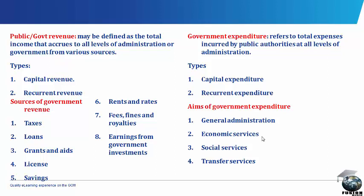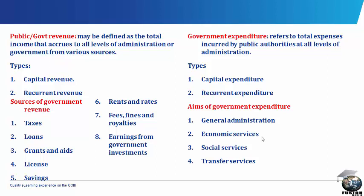Government Expenditure. Government or public expenditure refers to total expenses incurred by public authorities at all levels of administration. Types of Government Expenditure: there are two types — capital expenditure and recurrent expenditure. Capital expenditure consists of all expenditures on development projects and government investment and security, such as construction of roads, building of houses, schools, hospitals, and purchases of shares in ventures of companies. Capital expenditures are not usually made for immediate consumption but for future growth and development. The projects on which such expenditures are made are expected to earn investment income to the government if properly managed for commercial purposes.